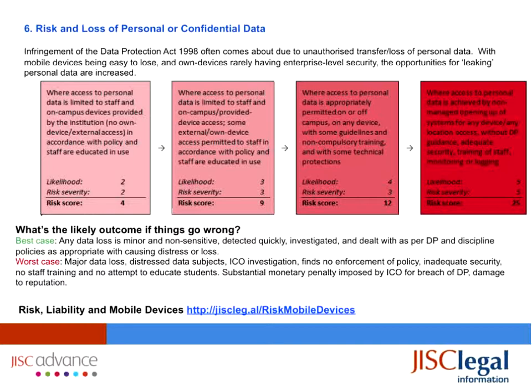It goes from not doing BYOD at all to fully open, and shows what the risks are if you go fully open. We look at equality, for example — if you're looking at accessibility for your users and students, then BYOD is a great solution and the more open the better, probably, as far as students are concerned. But the main area of risk is looking after personal or confidential data. So the toolkit tells you what the legal risk is, what the legal liability is, and points you as to where you sit in the risk spectrum, how much risk you're prepared to take, and the likely outcomes if things go wrong.